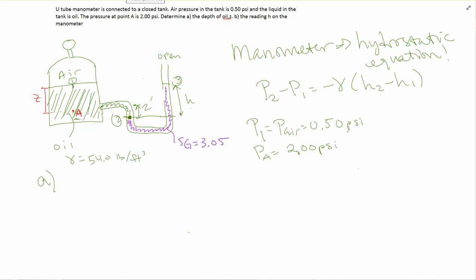Here we have a U-tube manometer connected to a closed tank. The air pressure in the tank is given as 0.5 psi, and the liquid in the tank is oil. Down here we're given gamma for oil, so it's 54 pounds per cubic feet. The pressure at point A — that little red point right here — is given as 2.0 psi.